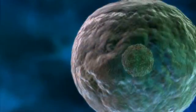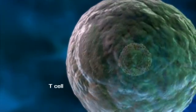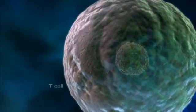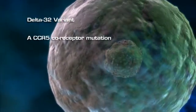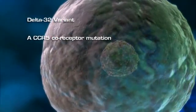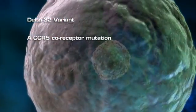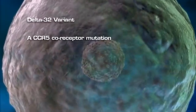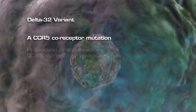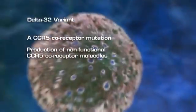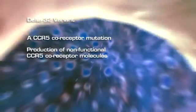The concept that coreceptors play a crucial role in HIV disease became evident when a common mutational variant of the CCR5 coding gene, known as Delta 32, was discovered in 1996. This CCR5 genetic variant results in the production of non-functional CCR5 coreceptors.